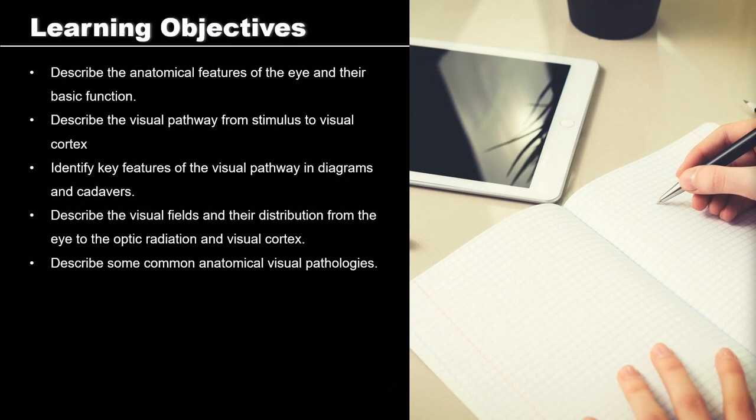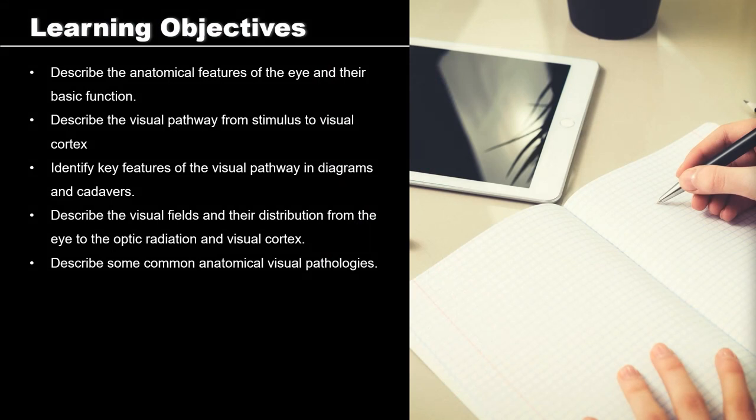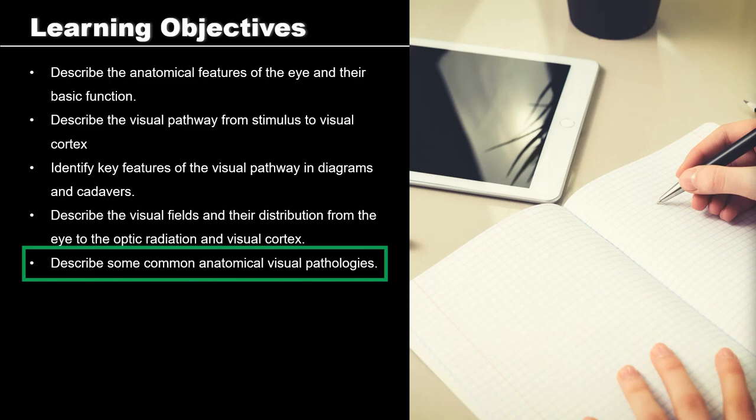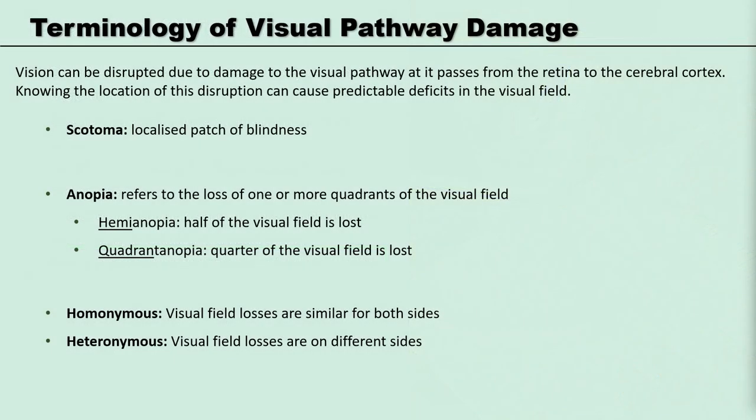So now we've looked at the pathways from image to cortex, let's look at a disruption in that pathway. We have a little bit of terminology to address first. A scotoma is a localized patch of blindness — this might be due to diabetic retinopathy as we saw earlier. Scotoma blindness usually results from damage to the retina or light being unable to reach the retina. This could be from injury to the eye such as ulceration of the cornea or exposure to chemicals, macular degeneration, or part of the retina being directly affected by a pathology.